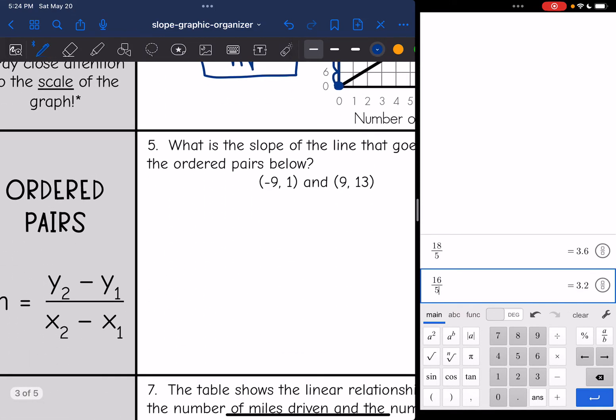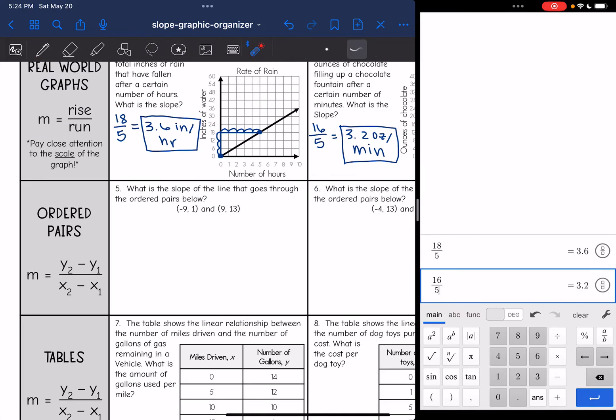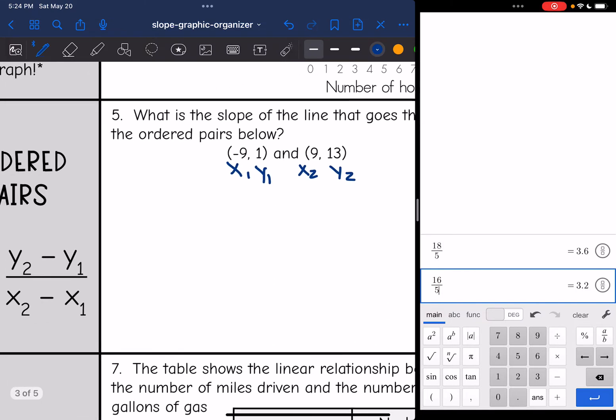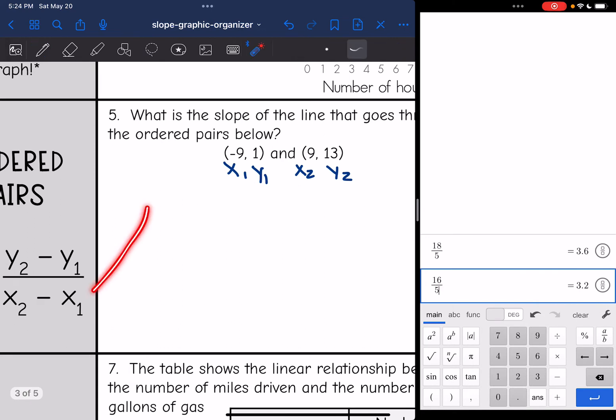Number 5 and 6, we are dealing with ordered pairs. And to find slope from ordered pairs, we're going to use slope formula. So 5 says, what is the slope of the line that goes through the ordered pairs below? First thing I'm going to do is label these points x1, y1, x2, and y2. And now I can easily plug into slope formula.